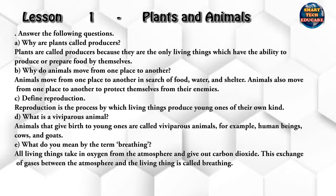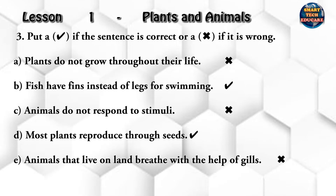And give out carbon dioxide. This exchange of gases between the atmosphere and the living thing is called breathing. Put a tick if the sentence is correct or a cross if it is wrong. Plants do not grow throughout their life — wrong.